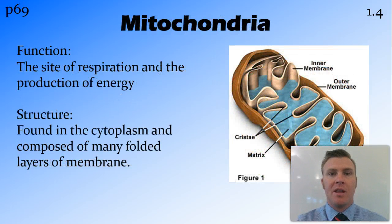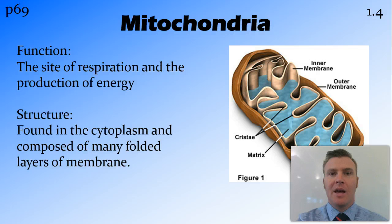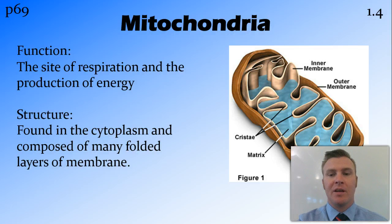Mitochondria can be thought of as the power plants of the cell, because inside them is where respiration occurs. They're found in the cytoplasm and consist of two membranes. The inner membrane is very folded into a structure called cristae, and this increases the surface area, therefore allowing more sites for respiration to occur.